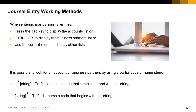You can enter multiple lines with debit or credit amounts. In every line you add, SAP Business One will recommend a balancing amount which you can update. When entering manual journal entries, in each line, place the cursor in the GL account or BP code field and press Tab to display the accounts list, or Ctrl+Tab to display the business partner's master data list. Alternatively, you can use the context menu to open the list of accounts or list of business partners.